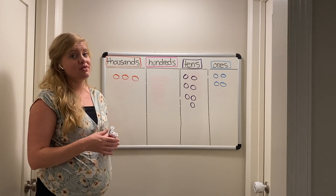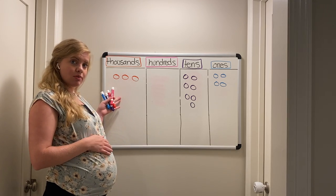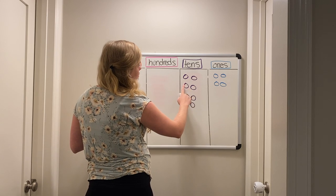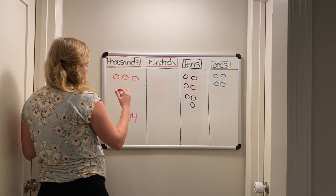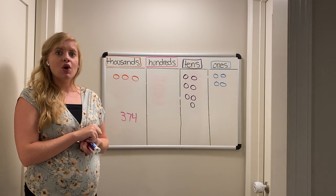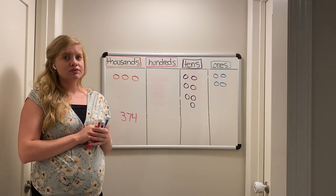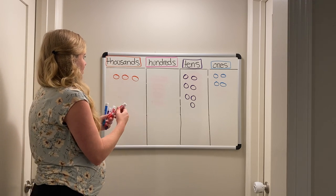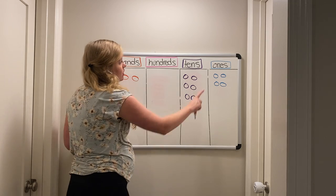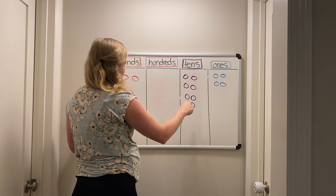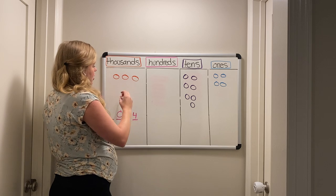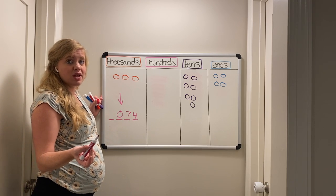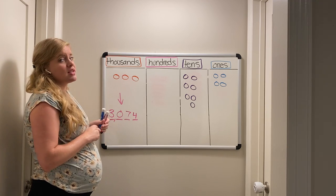Welcome back, third graders! Starting in the ones, I have four ones. I have seven tens. And I have three thousands — so is it 3,074? Wrong! Why? Because we have a four-digit number, but if you skipped the hundreds place, it's only a three-digit number. You need to write the digit zero in the hundreds place if there are zero hundreds, or your number will be incorrect. So we have three thousands, zero hundreds, seven tens, and four ones — three thousand seventy-four.